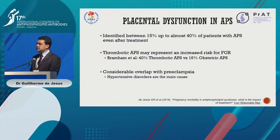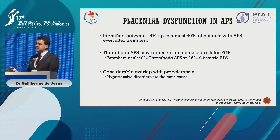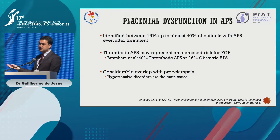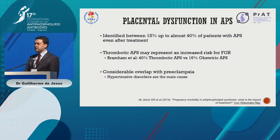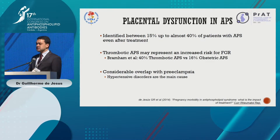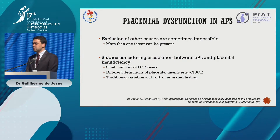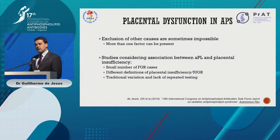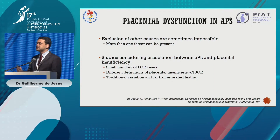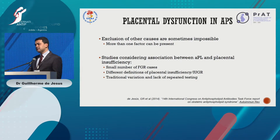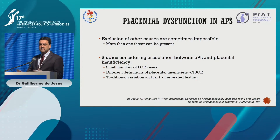Placental dysfunction in APS has been described in 15% to 40% of patients. Even after treatment, patients with thrombosis have increased risk for fetal growth restriction, and there is considerable overlap with preeclampsia. Hypertensive disorders are the main cause of placental dysfunction. We must exclude other causes, though sometimes it's impossible because more than one factor can be present. There are few studies specifically on fetal growth restriction — most focus on fetal loss and preeclampsia — and different definitions and lack of repeated tests complicate the literature.